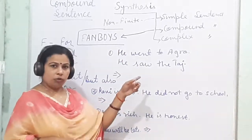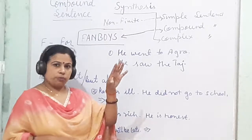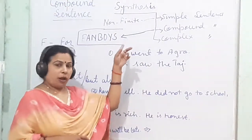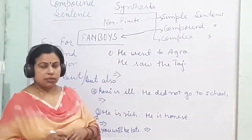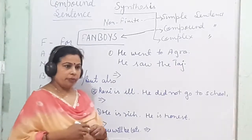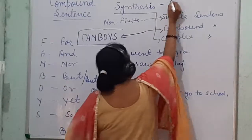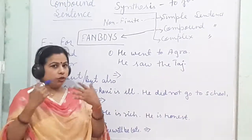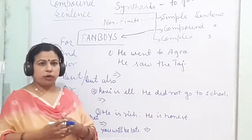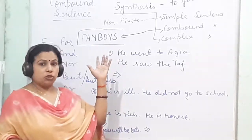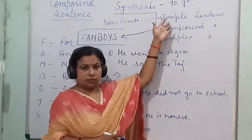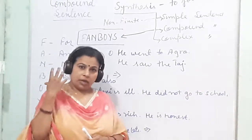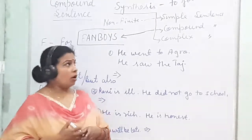इसका एक Part और बनेगा — Clause Part 1, Part 2, Part 3 and Part 4. Synthesis का मतलब है — synthesis means to join. उसमें combine करना है. What you have to combine, what things are going to be joined — those things are already explained in Part 2, where I had explained Simple Sentence. Clause Part 2 में Simple Sentence को define किया है और Simple Sentence बनाने का जो process है, वो बताया है.